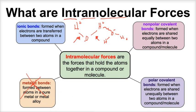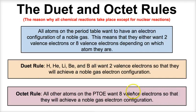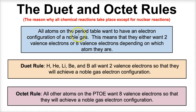So let's take a look at the duet rule and the octet rule, which are basically the main driving force — the reason why virtually 99.9% of all chemical reactions take place. The duet rule and octet rule refer to the amount of valence electrons, or electrons in the outermost energy level, that atoms prefer to have. For example, atoms like hydrogen, helium, lithium, beryllium, and boron all typically want two valence electrons in their outermost energy level or outer shell.